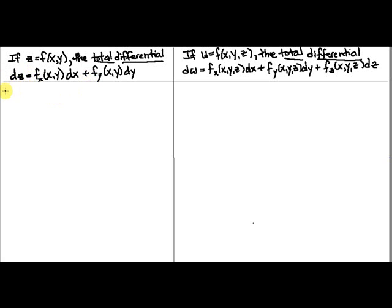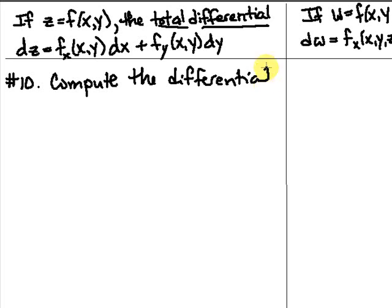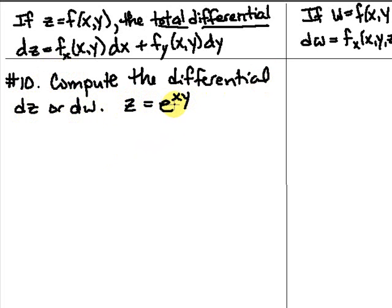This is number 10 in section 14.4. The instructions are to compute the differential dz or dw of the specified function — they're referring to the total differential. The function given is z equals e to the xy. Since it's a two-variable function, we're going to use the first definition of total differential. To find dz, we need the partial derivatives of f with respect to x and with respect to y.